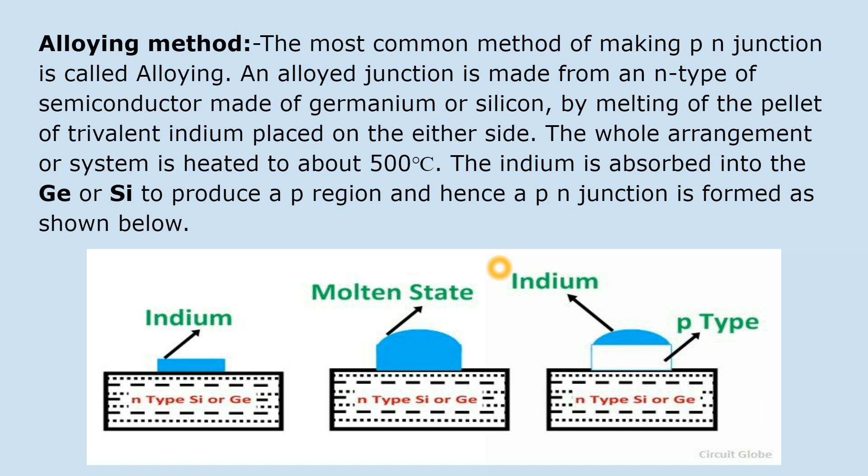An alloyed junction is made from an N-type semiconductor of germanium or silicon by melting a pellet of trivalent indium placed on either side, as shown in the diagram below. N-type silicon या germanium semiconductor के ऊपर एक trivalent impurity जैसे indium का pellet placed किया जाता है। The whole arrangement is heated to about 500 degrees centigrade. The indium is absorbed into the germanium or silicon — indium जो कि एक P-type की impurity है, वो N-type material में absorbed हो जाती है — and it produces a P-region. Hence a P-N junction is formed.